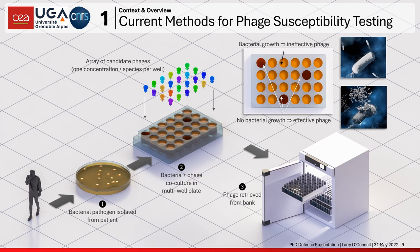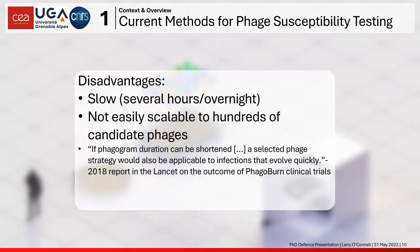If the phage is not effective, the bacteria proliferate, producing lots of optical scattering centers, and the solution remains opaque. This optical signal allows us to select the correct bacteriophages — in this case three — from a pre-prepared bank, which can then be made into a cocktail and administered to the patient. The problem is this is slow, taking several hours, and it's difficult to scale up to hundreds of phages or for large numbers of patients.